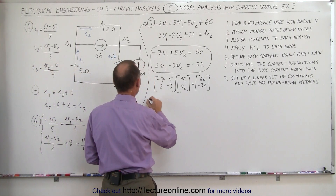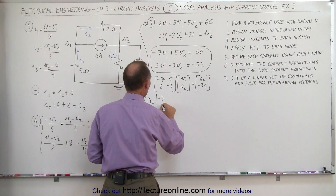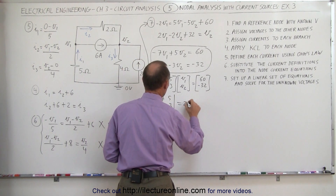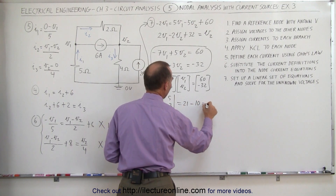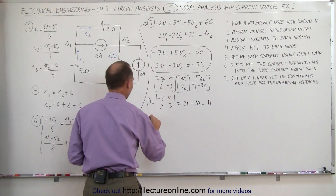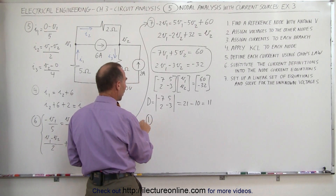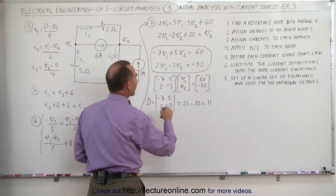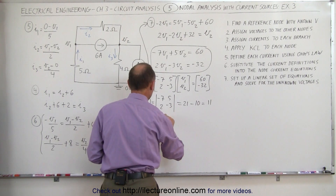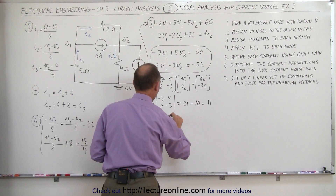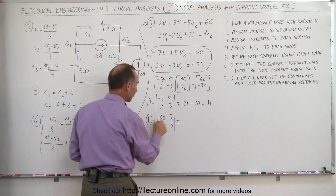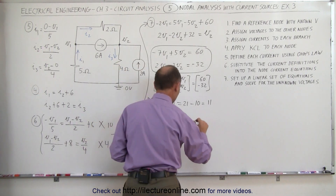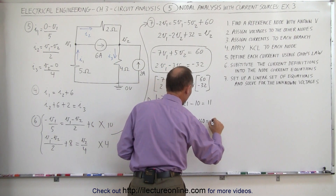We find the determinant D of the matrix: minus seven, two, five, minus three. This equals the product of minus seven times minus three, which is twenty-one, minus the product of five times two, which is ten, giving us a determinant of eleven. To find V1, we replace the first column with sixty and minus thirty-two, giving sixty times minus three equals minus one eighty, minus minus thirty-two times five which is minus one sixty, resulting in minus twenty.